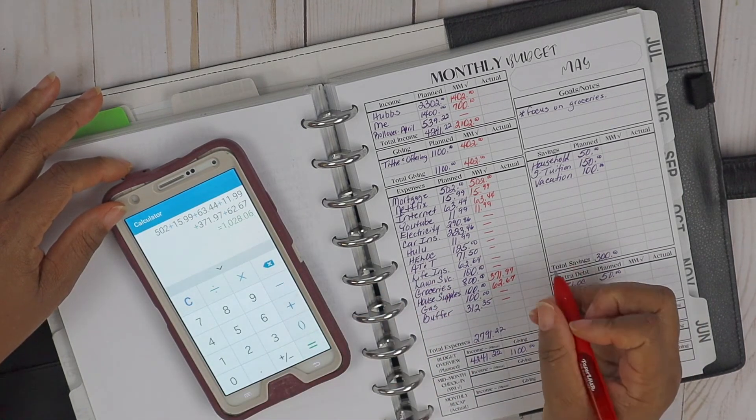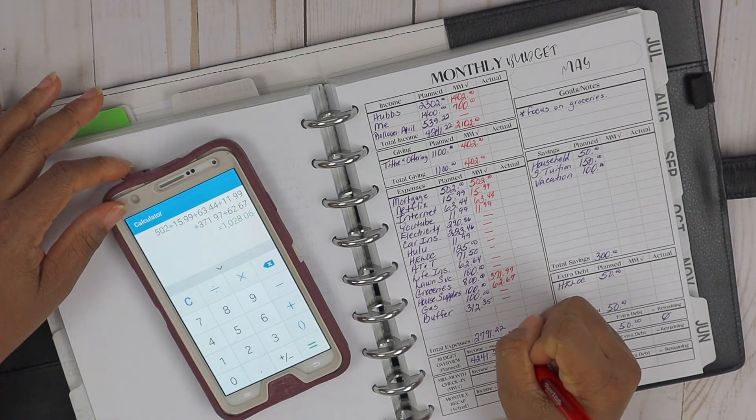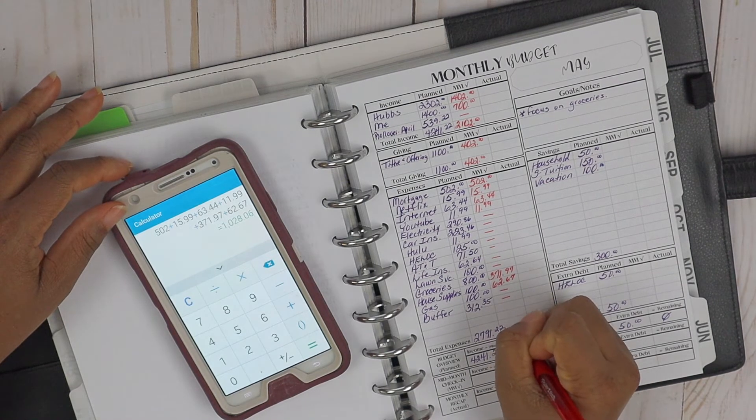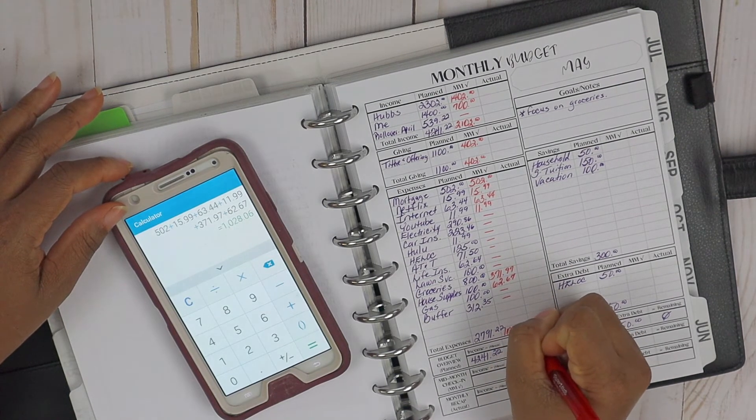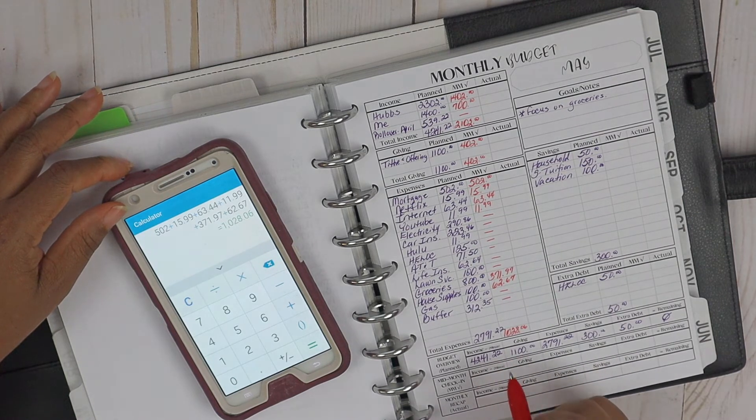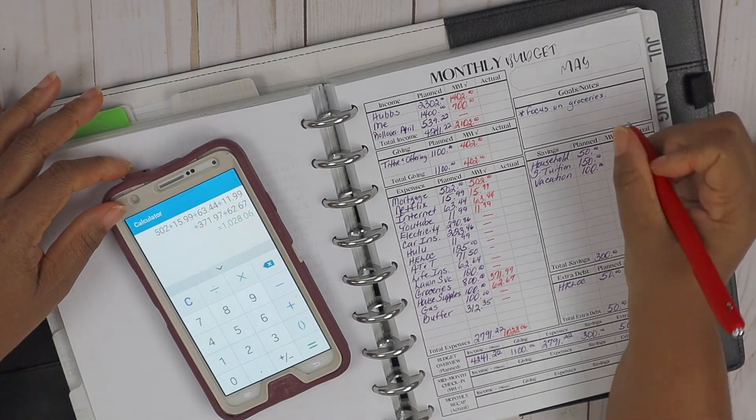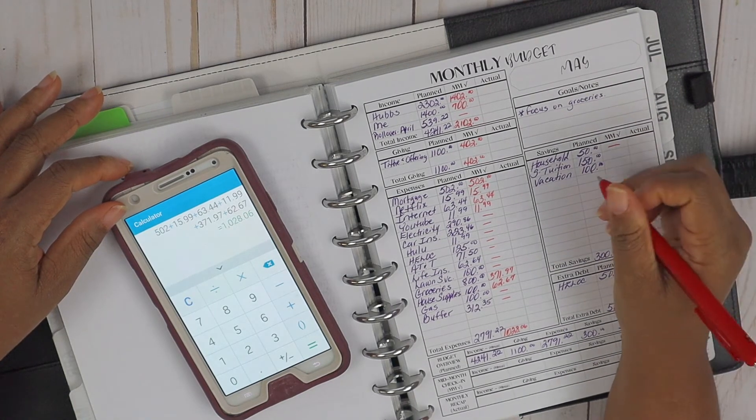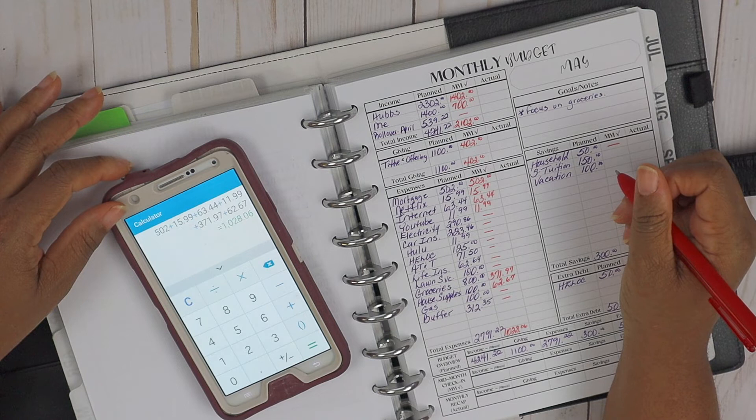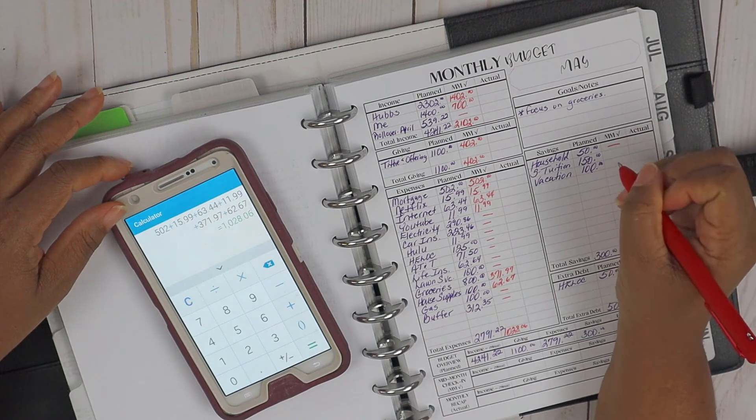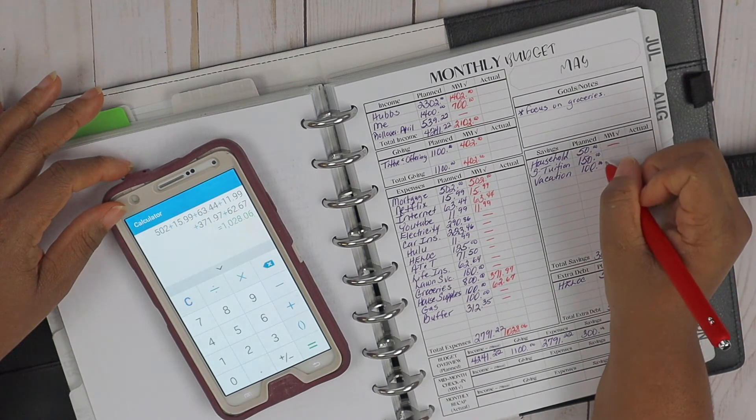All right, so thus far at mid-month check, we have spent $1,028.06, so we're looking really good at mid-month. Now as far as our savings, now the household, that comes out at the end of the month, is automatically transferred from our joint checking account to this joint savings account, so we don't have to worry about that.